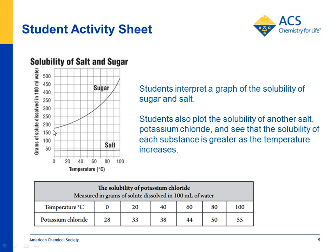A solubility curve graph is included so students can see what happens with sugar. At low temperatures, about 175 grams dissolves in 100 mL of water at 0 degrees, but as you increase the temperature, a lot more sugar will dissolve. For salt, as you increase the temperature, only a bit more dissolves. In general, almost every soluble substance dissolves more in hot than in cold, but the extent differs depending on the substance.